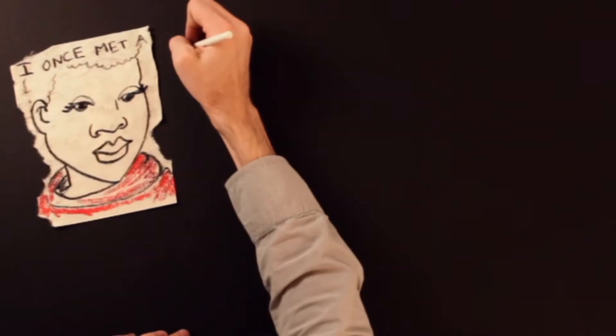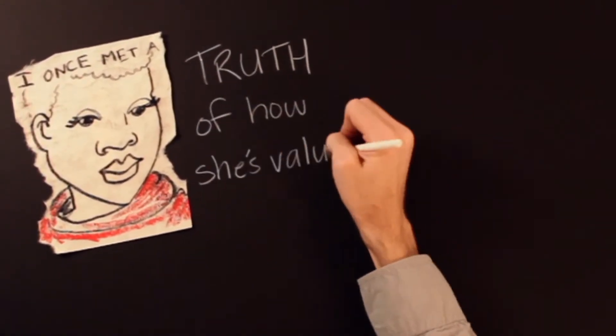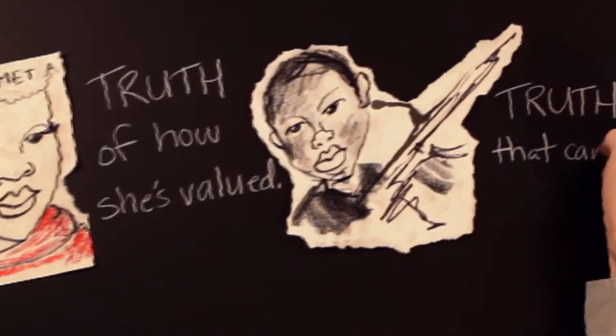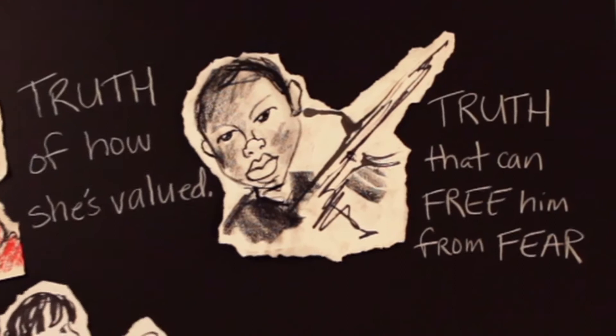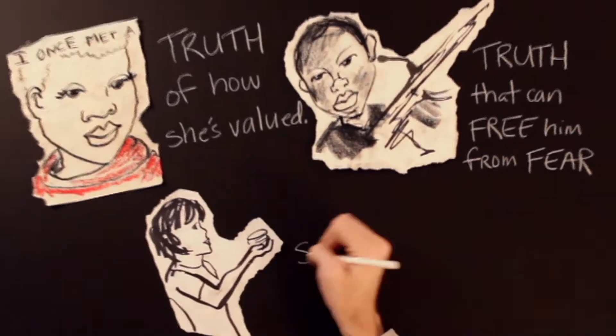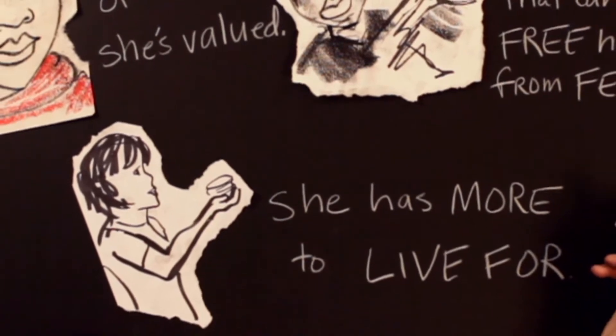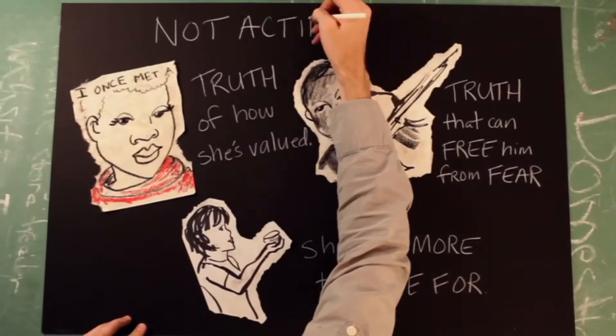The girl in the red sweater deserves to know the truth of how she's valued. The boy soldier needs to know the truth that can free him from fear. Maria deserves to know that she has more to live for. I can't imagine knowing how to release them from their desperation and not acting on it.